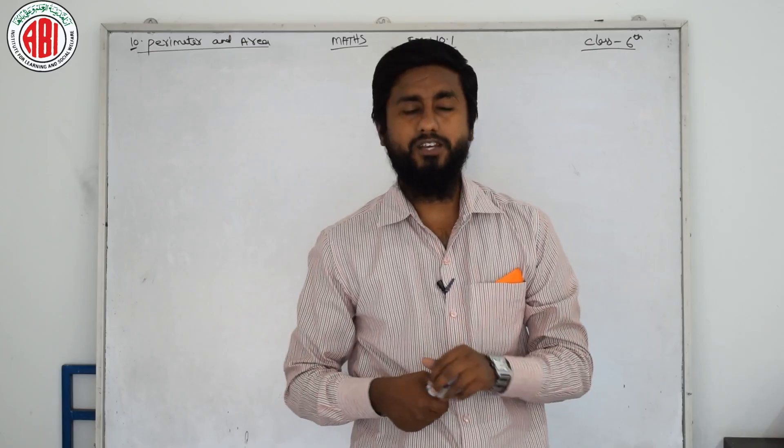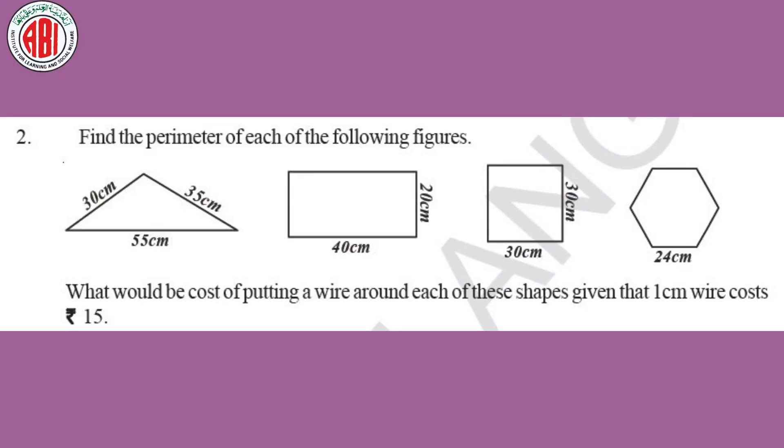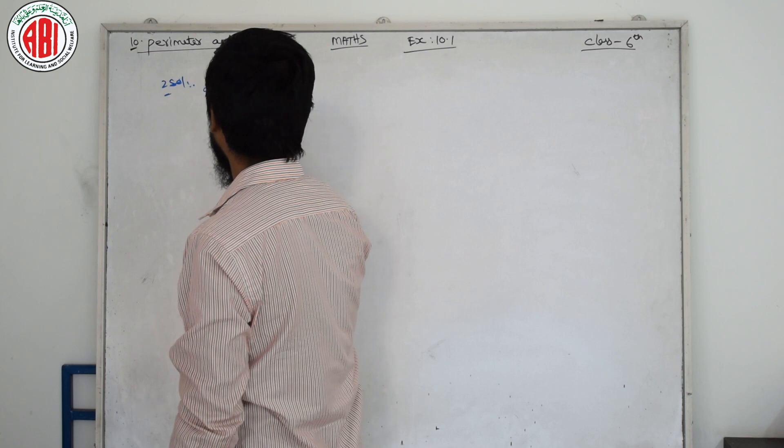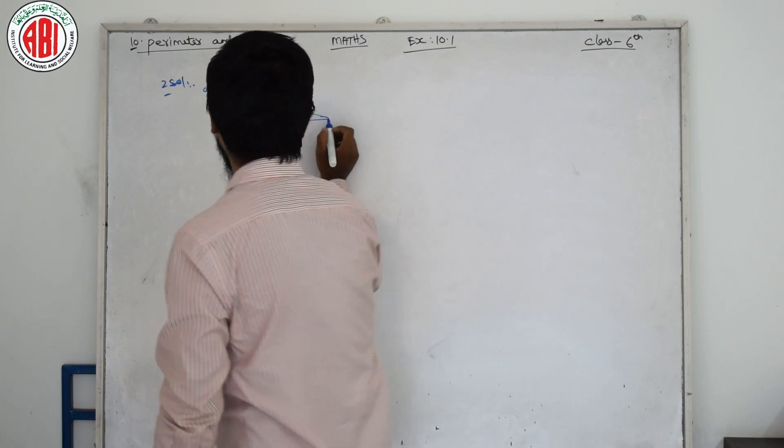Now, question number 2. Find the perimeter of each of the following figure. Here, it is given like triangle, rectangle, square and hexagon with 6 sides. What would be the cost of putting a wire around each of these shapes given that 1 centimeter wire costs rupees 15? We have seen the question. Second, we will solve the first. First, we have to do triangle. Triangle, we have to find the perimeter.